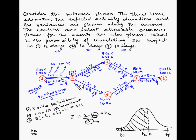For activity 2-4: condition 1 — EO = 2, LO = 2 for the tail event, so met. But condition 2 — EO = 5 and LO = 6 for the head event — this is not met. So activity 2-4 is not a critical activity. For activity 4-5: for the tail event, EO is not equal to LO, so condition 1 is not met. Activity 4-5 is also not a critical activity.